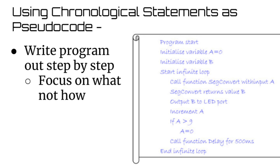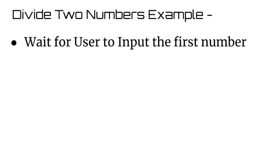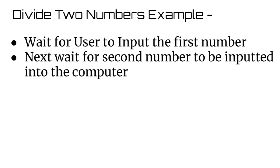Another popular pseudocode technique is to simply write out what you want your code to do chronologically. Don't necessarily think about how you want to do it — just talk about from start to finish, what is the program you're writing going to complete step by step. For example, let's say you're making an app that takes in two numbers and divides them. First, I want to wait for the user to input the first number. After I get the first number, I want to wait again for the user to input the second number.